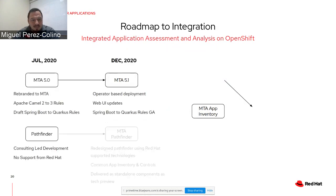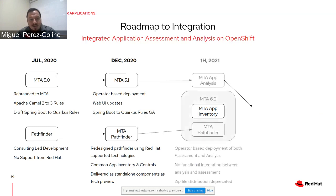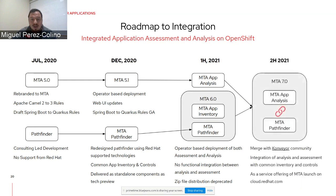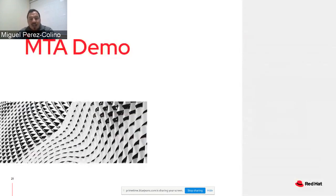We already delivered version 5.0 and are working on 5.1. We're redesigning Pathfinder for the roadmap to integration, and we'll have an app inventory and stakeholder controls — making it easier to control the whole inventory of applications. Once we have the app inventory and Pathfinder ready with their own operator and ready to run on OpenShift, we'll merge it with the current analysis tool into one single tool available in the Conveyor community as an operator, easily consumable in any Kubernetes environment.